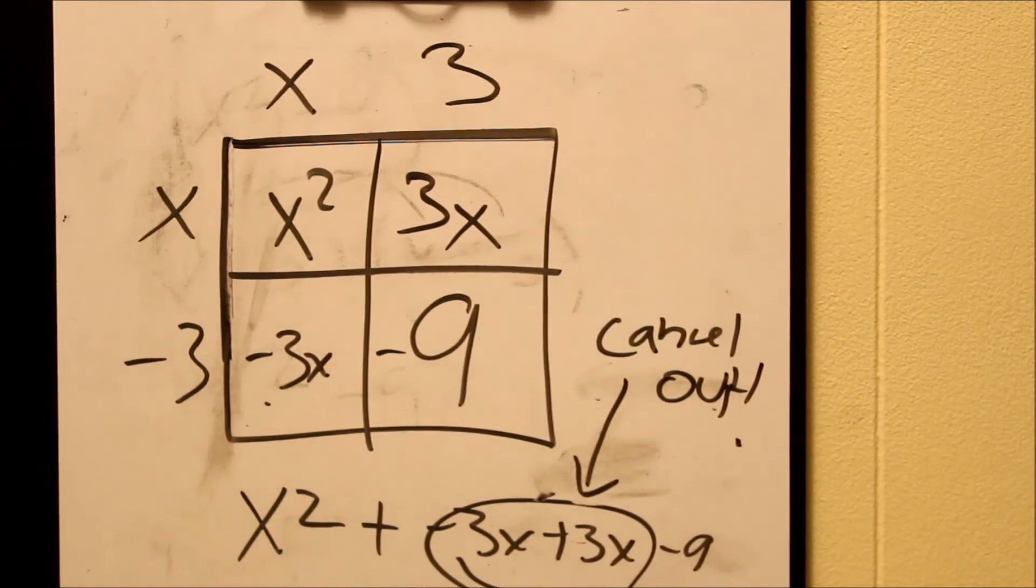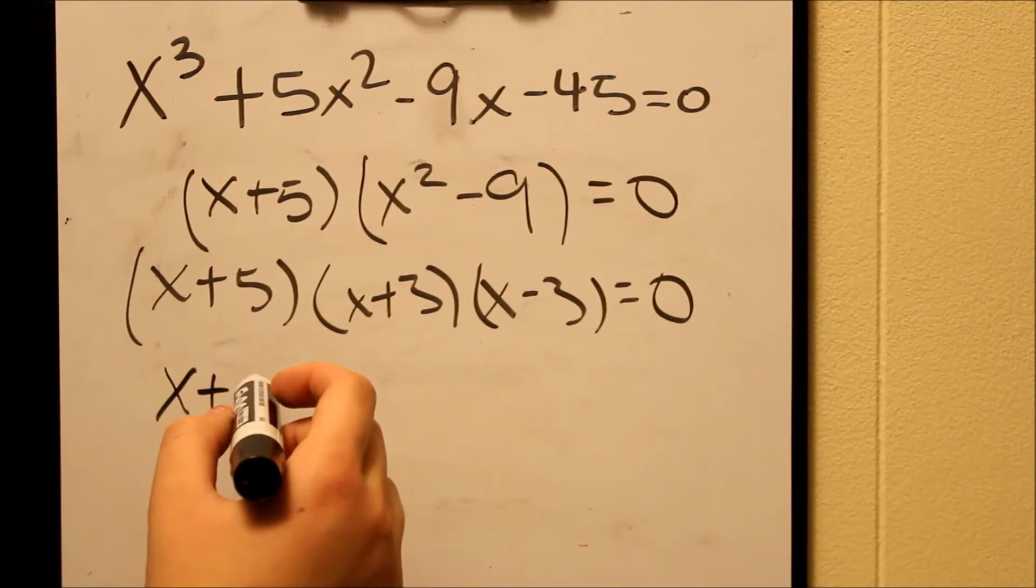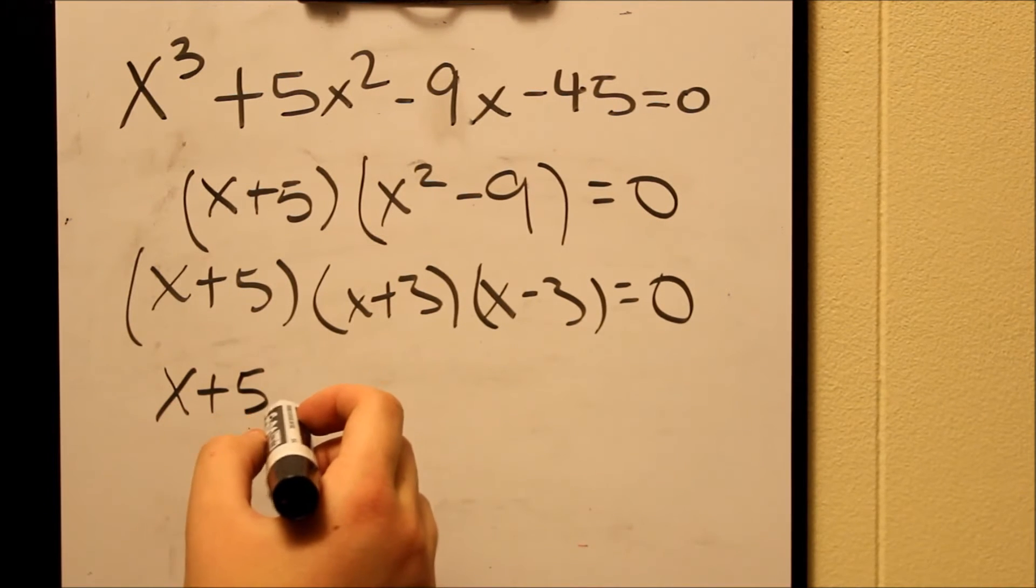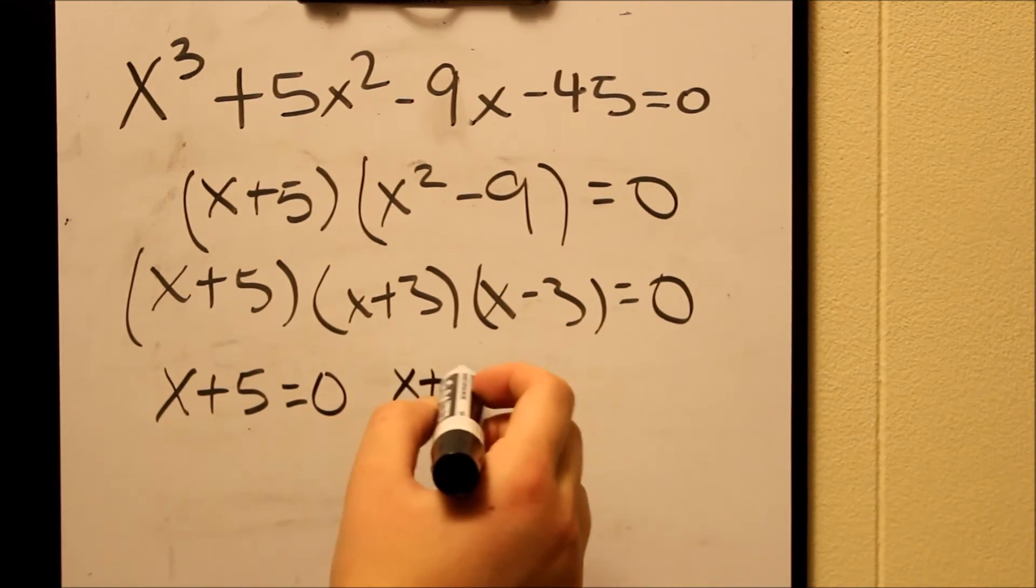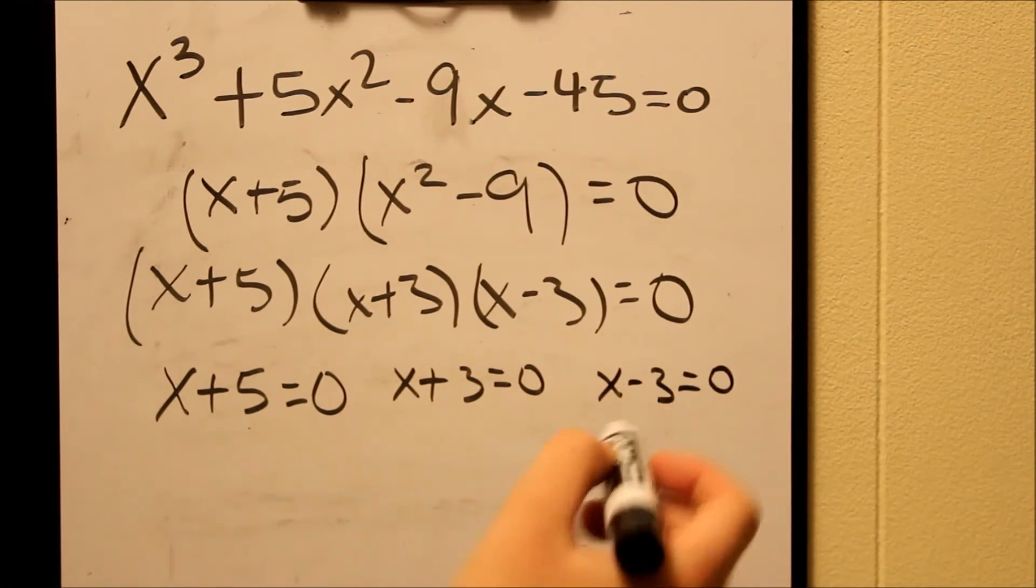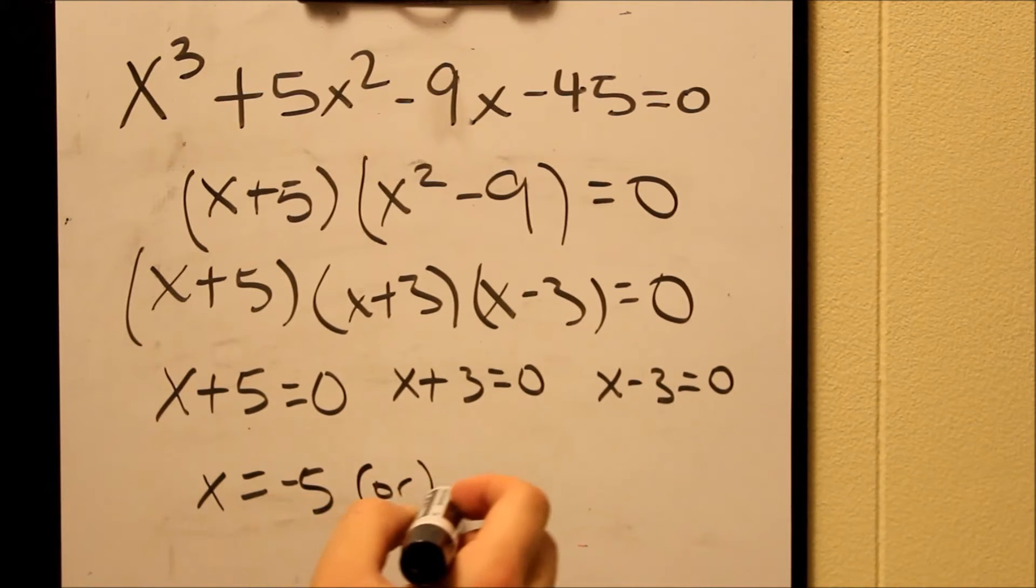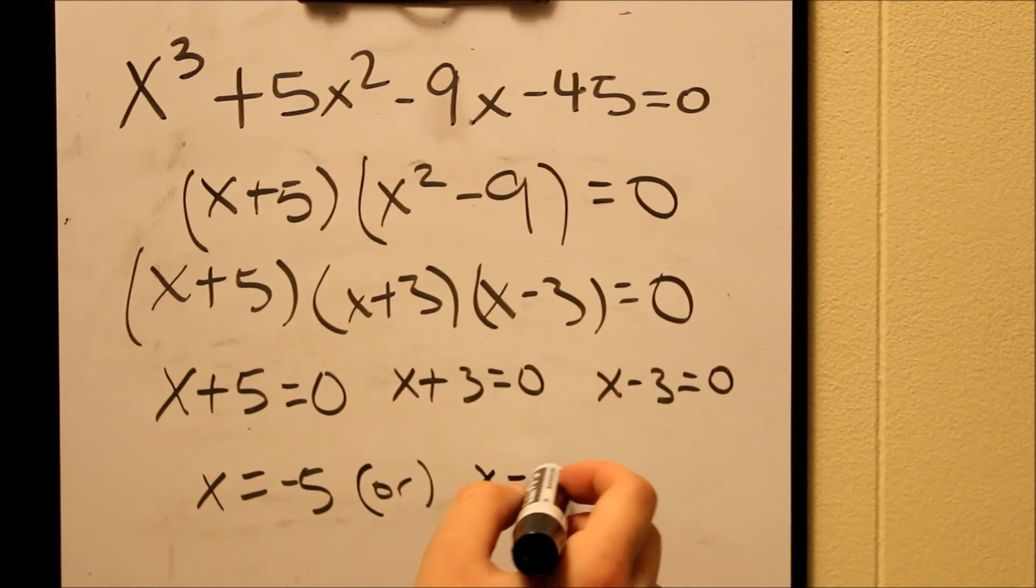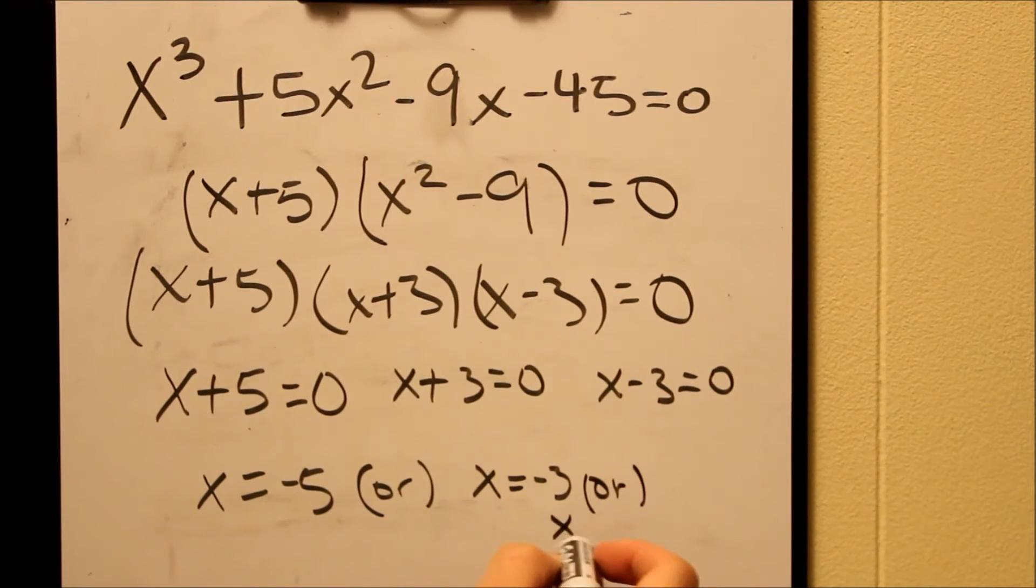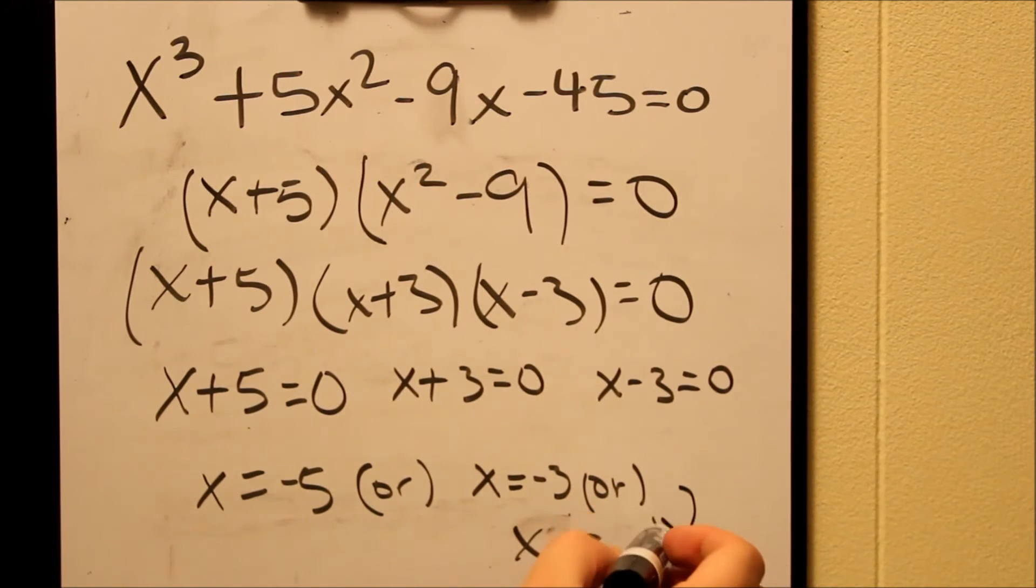Now going back to the equation, we can write that x plus 5 is equal to 0. And then we can do x plus 3 is equal to 0. And x minus 3 is equal to 0. And we do this because you can't simplify this anymore. This is the most you can factor out. So we can do what plus 5 is equal to 0. So that's negative 5 plus 5 equals 0. Negative 3 plus 3 is equal to 0. And 3 minus 3 is equal to 0. And that is how you solve this out. We did it, guys. We factored. And we did it. Congrats.